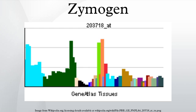Fungi also secrete digestive enzymes into the environment as zymogens. The external environment has a different pH than inside the fungal cell, and this changes the zymogen structure into an active enzyme.